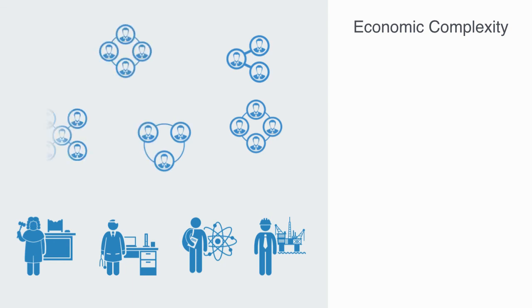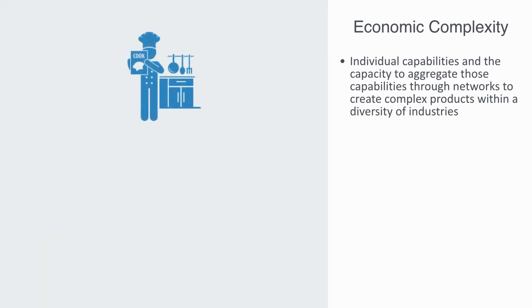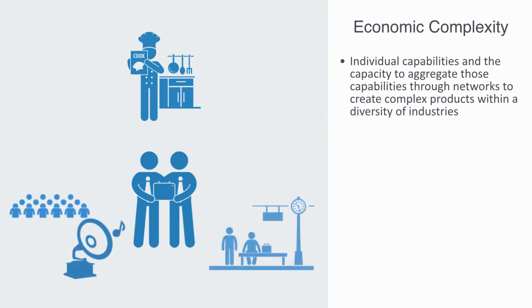This process within economic development is best illustrated with reference to the theory of economic complexity. The theory of economic complexity postulates that the key to prosperity is in both accumulating individual capabilities and the capacity to aggregate those capabilities through networks to create complex products within a diversity of industries. It starts with a recognition that underdeveloped economies know how to make only few things, while developed economies know how to make many things.